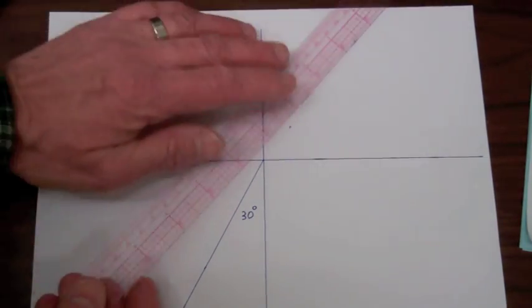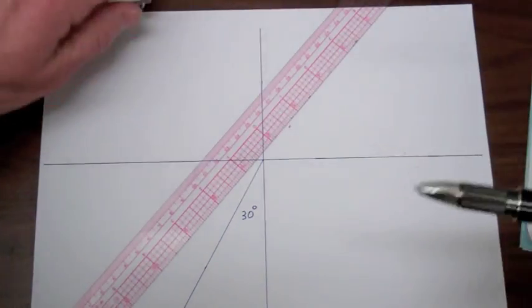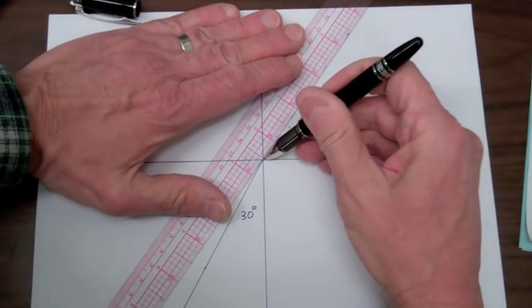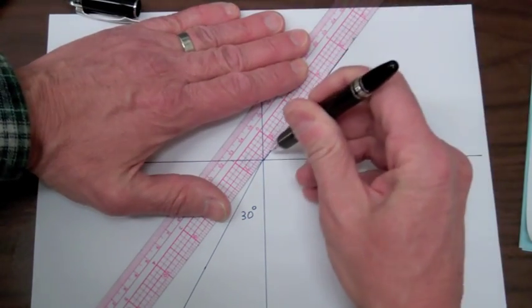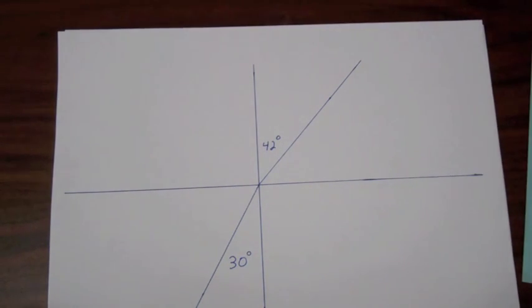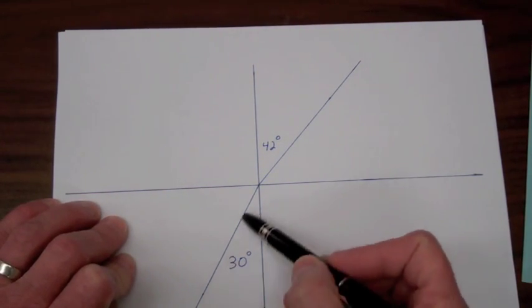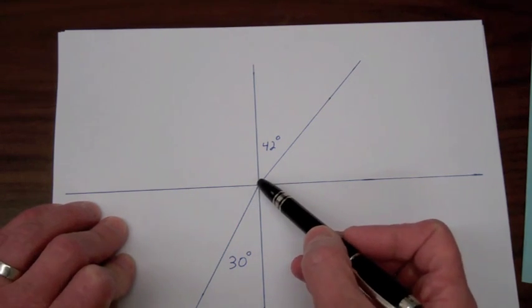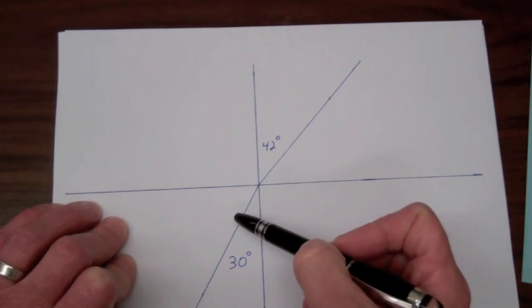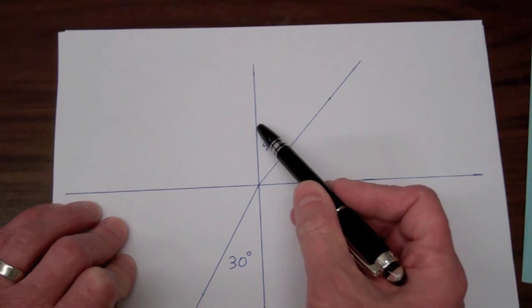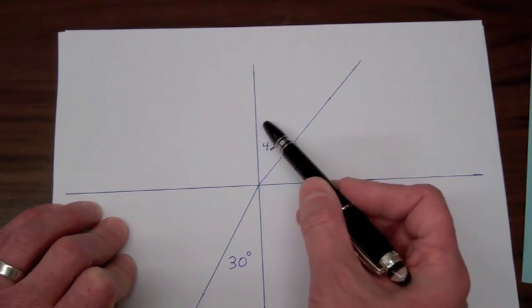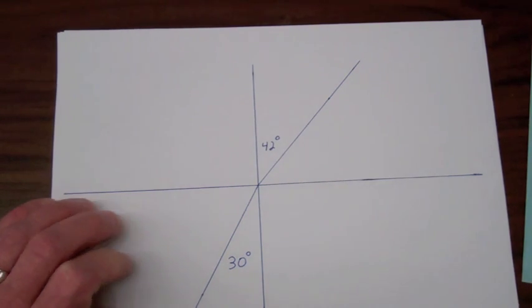So the refracted beam was along this direction. So with an angle of incidence of thirty degrees then the transmitted beam going from water to air has a transmitted or refracted angle of forty-two degrees.